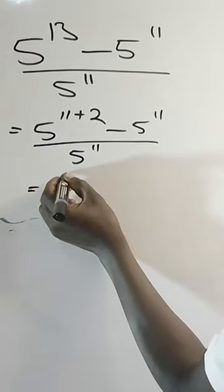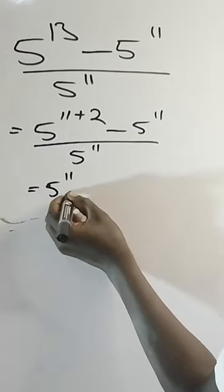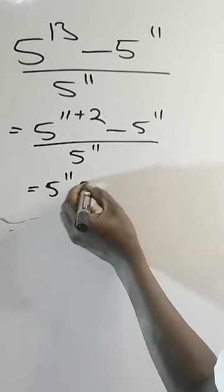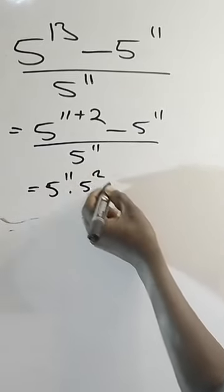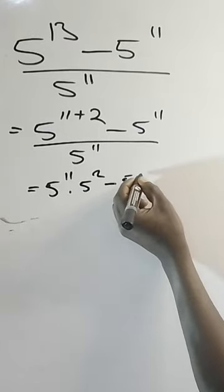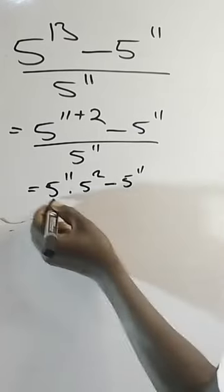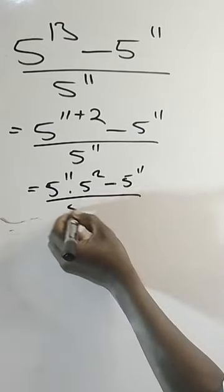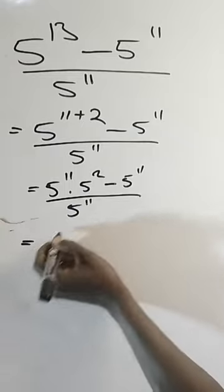This is the same thing as 5 raised power of 11 multiplying 5 raised power of 2, minus 5 raised power of 11, everything divided by 5 raised power of 11.